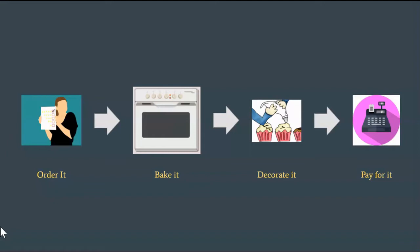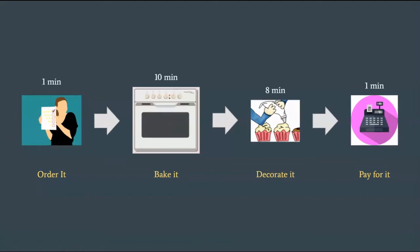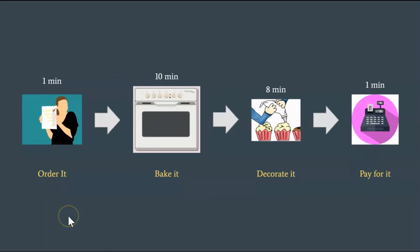So if a customer orders one cake, the bakery will bake one cake, decorate one cake, and receive payment for one cake. Let's say that it takes one minute to process an order, ten minutes to bake it, eight minutes to decorate it, and one minute to pay for it. It's not hard to see that most of the time, customers will be waiting for the baking to complete. If you look carefully, it takes 20 minutes for a single cake order to go through. As the owner of the bakery shop, what is the goal of your bakery?